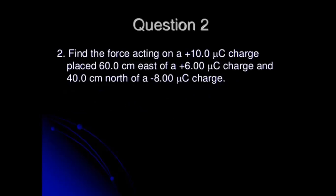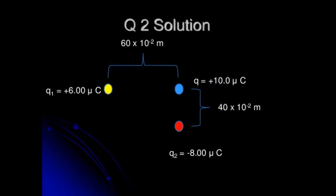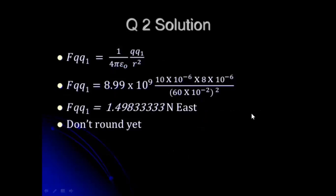For the second question: find the force acting on a positive 10 microcoulomb charge placed 60 centimeters east of a 6 microcoulomb charge and 40 centimeters north of a negative 8 microcoulomb charge. If we illustrate this in a Cartesian plane, Q1 as positive 6 microcoulombs has a distance of 60 times 10 raised to negative 2 meters from Q as positive 10 microcoulombs, and the distance between Q and Q2 is 40 times 10 raised to negative 2 meters.